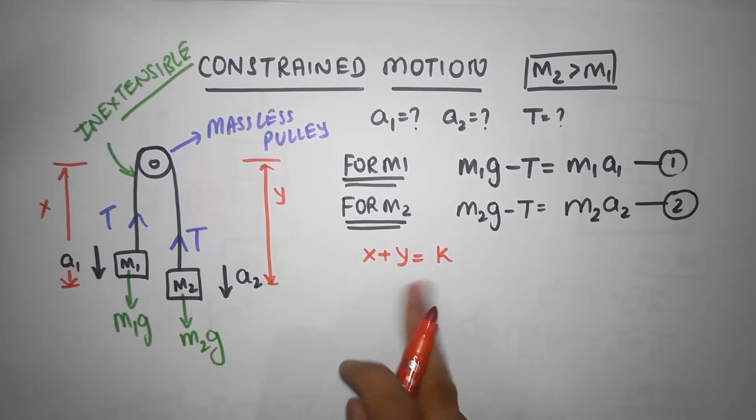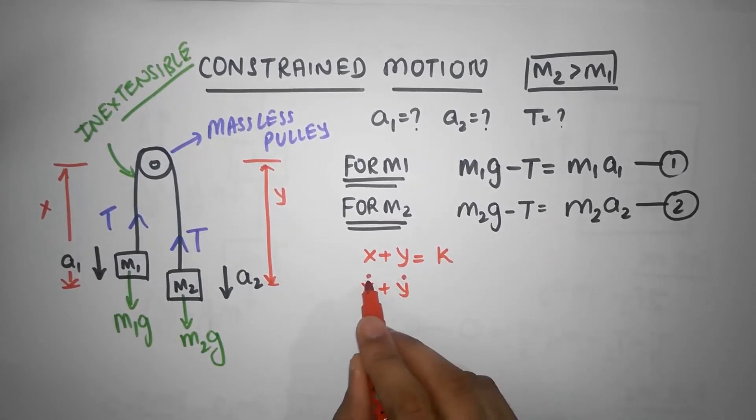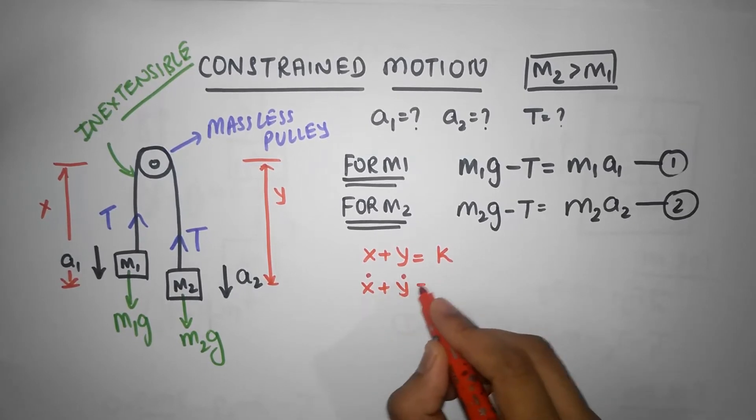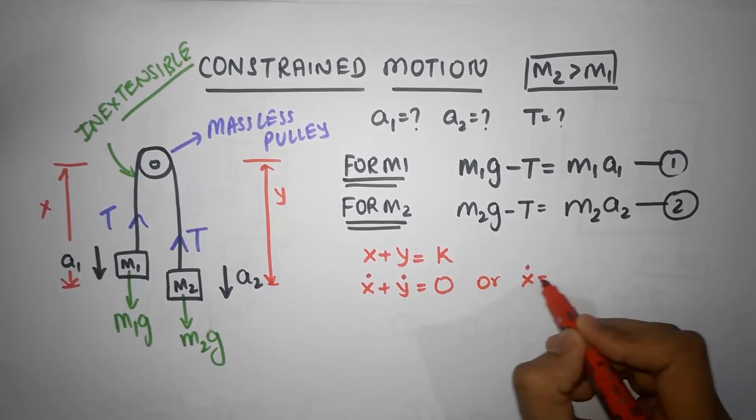Because x plus y is a constant, if I differentiate this, x dot plus y dot, this dot represents differentiation, must be 0. Or x dot must be equal to minus y dot.